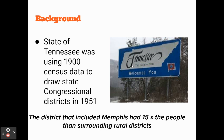For example, the district that included Memphis had 15 times more people than some of the surrounding rural districts. This basically meant that the representative in the Memphis district was representing so many more people than the representative in the neighboring rural congressional district. Memphis was in a district that had 15 times more people than the surrounding rural districts.